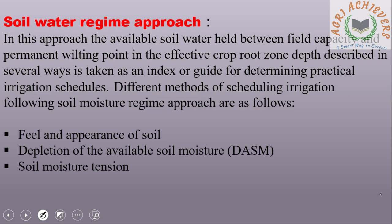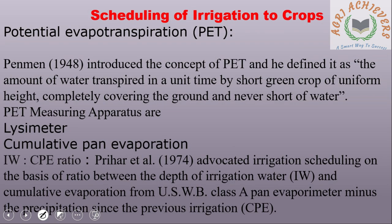Soil Water Regime Approach: In this approach, the available soil water held between field capacity and permanent wilting point in the effective crop root zone depth describes in several ways and is taken as an index or guide for determining practical irrigation schedules. Different methods of scheduling irrigation following the soil moisture regime approach are: feel and appearance of soil, depletion of available soil moisture, and soil moisture tension.